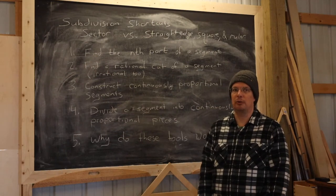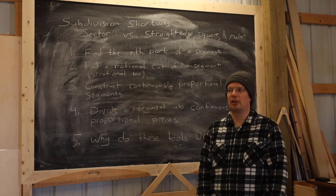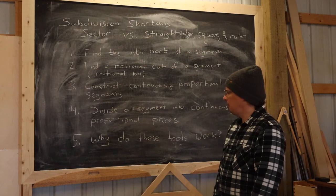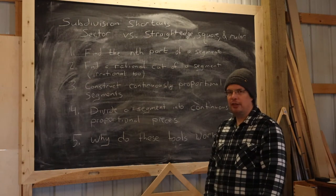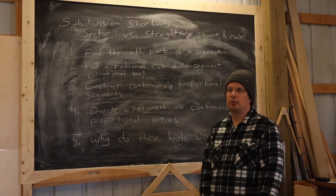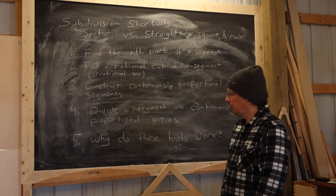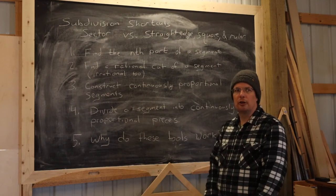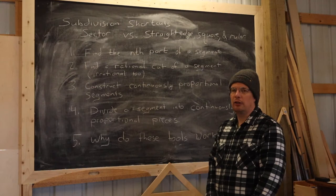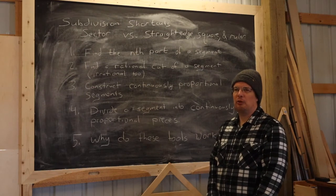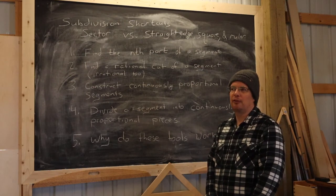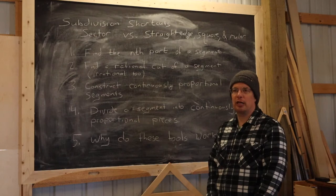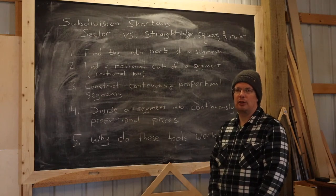Tasks one through four are things we know how to do with a compass and a straight edge, oftentimes using parallel line constructions. But the benefit of using a sector — or even the ruler, layout square, and straight edge — is that it's faster. We're going to conclude today with a look at why those techniques work, because they're not just faster but also exact techniques.